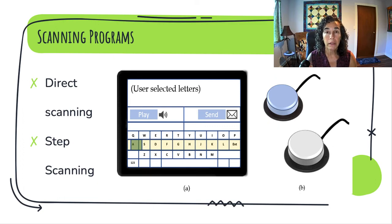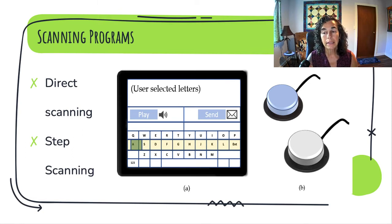With step scanning, the information is given in steps on progressive screens. Step one: a switch is activated to move the highlighter from one button to another to select a specific category. When the highlighter is over the button, a second switch is activated to select another screen. There are a variety of different ways of scanning and selecting, and there's information in the presenter notes about scanning programs.